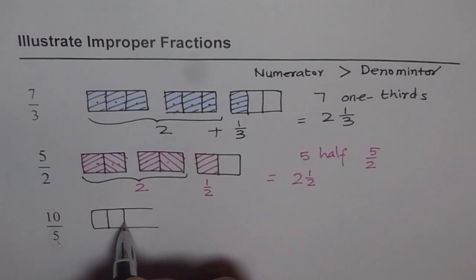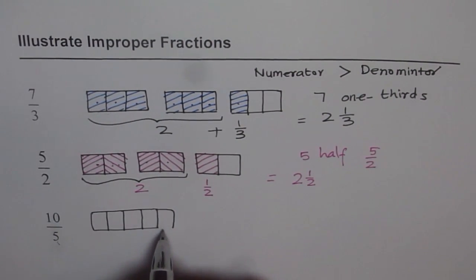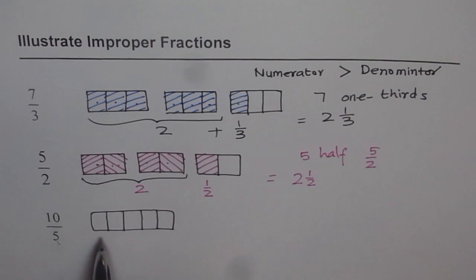5 parts. So let's say 1, 2, 3, 4, and 5. So we have a rectangle with 5 parts and every part will be 1 fifth.